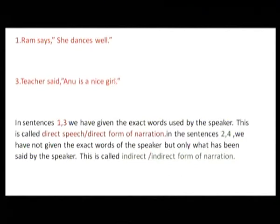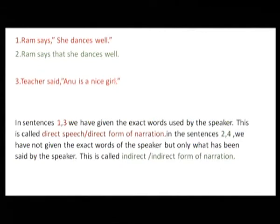That is how the name direct and indirect speech came about. When we change these sentences, they become indirect sentences. Now if we look at the first sentence: Ram says that she dances well. The two sentences are joined into one with the help of the word 'that', which is a conjunction. In sentences two and four we see this clearly.